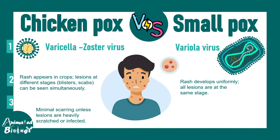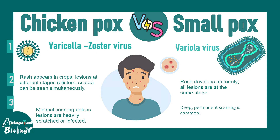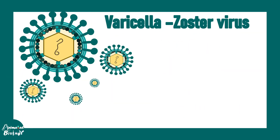Scarring in chickenpox is minimal, whereas in smallpox there can be deep and permanent scarring, which is very common. Chickenpox has nothing to do with chickens — the name likely came from the blisters' striking resemblance to chickpeas. Smallpox is not smaller than chickenpox; it's just a name.